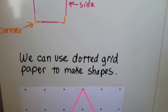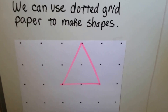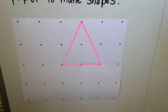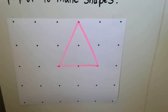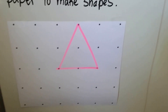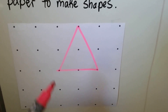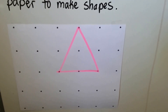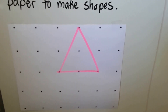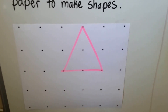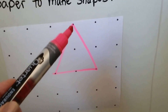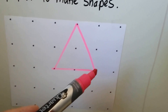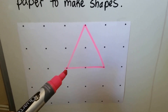We can use dotted grid paper to make shapes. You can find these on the internet — just type in dotted grid paper and they'll come in different sizes. Some of them have the dots very close together, and some of them have them far apart like this one. And we can connect the dots to make shapes.